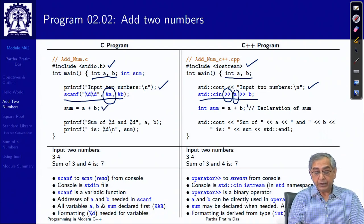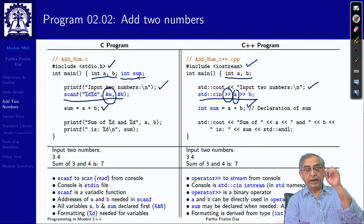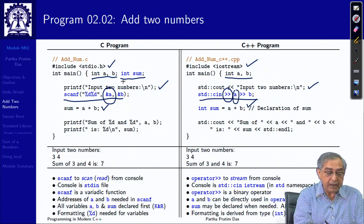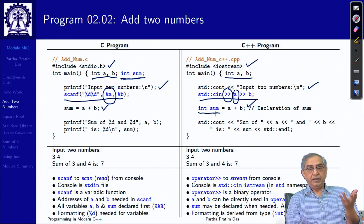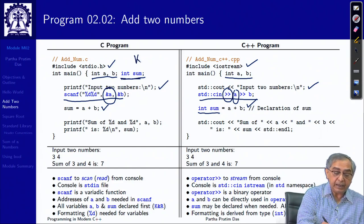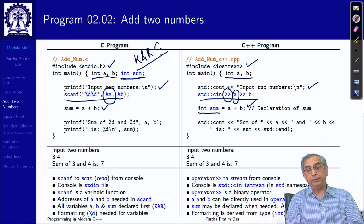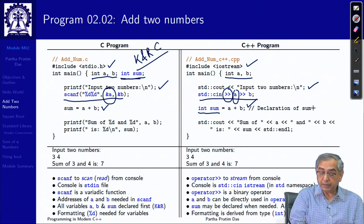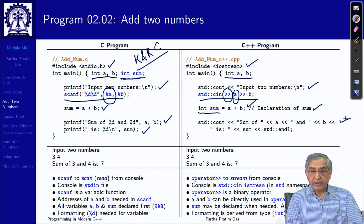Then you compute the sum. The only difference I show is that the sum variable needed to be declared before the first executable statement in Kernighan and Ritchie's book. But in C++ I have declared it in the middle — this is what C++ allows from the very beginning. In fact, C also allows it from C89 onwards, but I have shown the comparison. So in KR C, variable declarations in the middle of a function were not allowed.